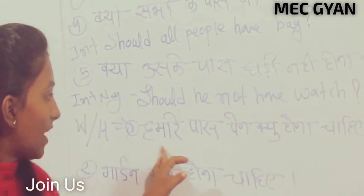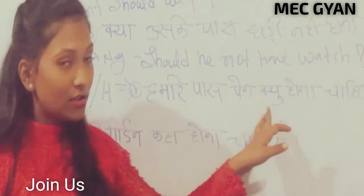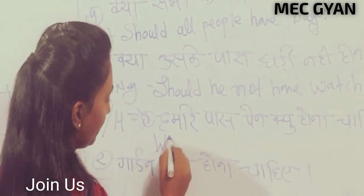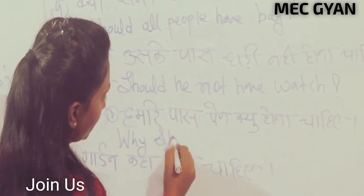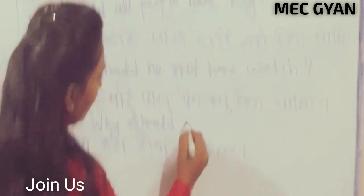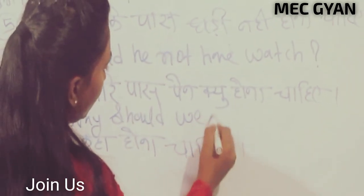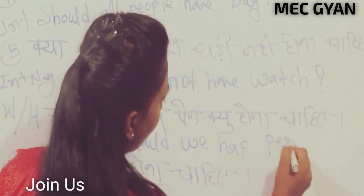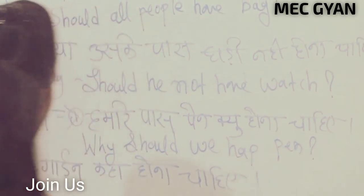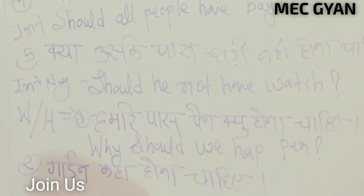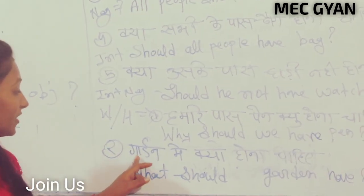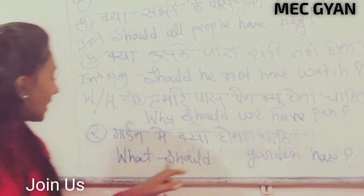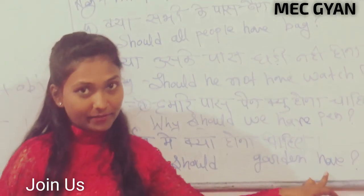Should we not have a number? And for WH-questions, question word: why should we not have pain? Why should we have pain? And where should we not have pain? What should we not have in the garden? What should we not have?